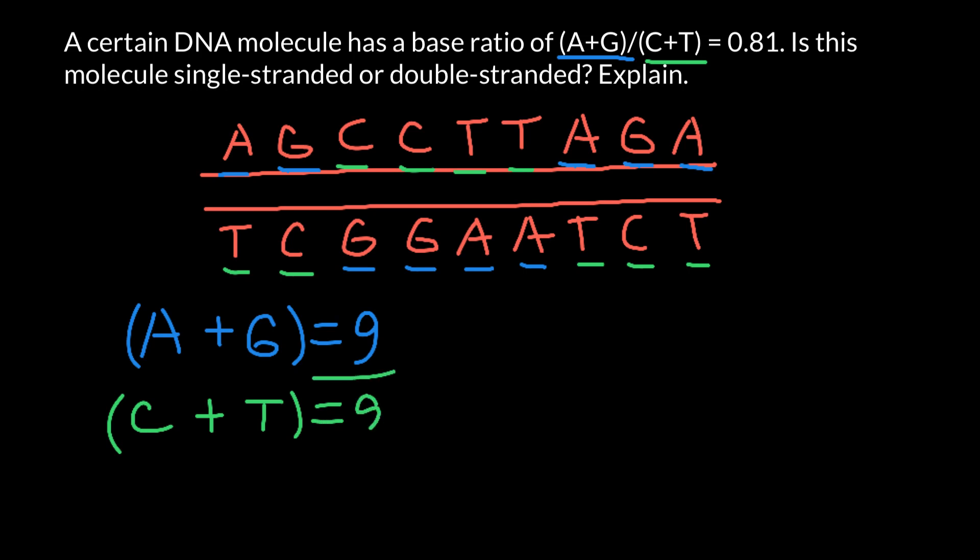Now, the ratio would be 9 divided by 9, and this is going to equal 1. So as you see, when we have the ratio of adenine plus guanine to cytosine and thymine, it always has to be 1 if, of course, we have double-stranded DNA.